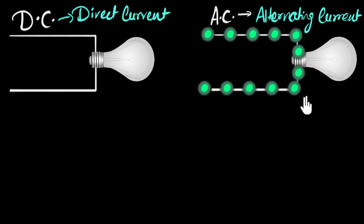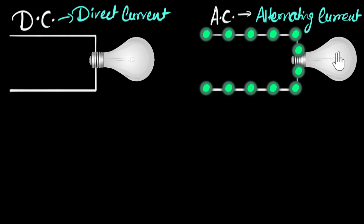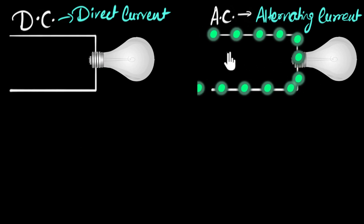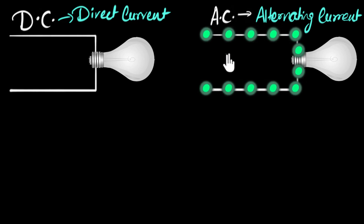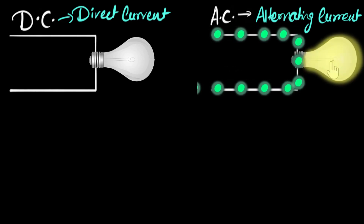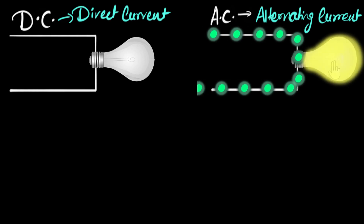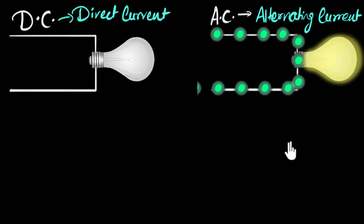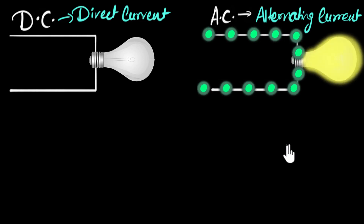Every time the current stops — the electron stops — the current goes to zero. And when the current goes to zero, the filament cools down a little bit, and the bulb dims a little bit. Why doesn't the bulb completely switch off? Because the current comes back up very quickly — it stops only for a fraction of a second. So the bulb cools down just a little bit, then heats up, cools down and heats up. That's why we see the bulb flickering.